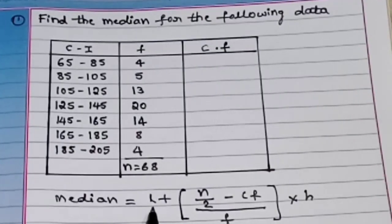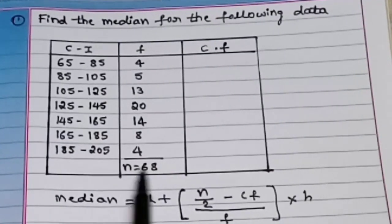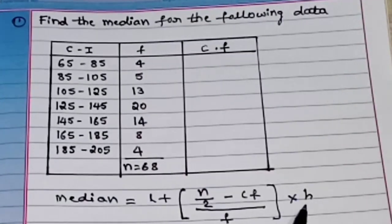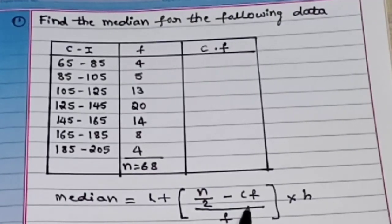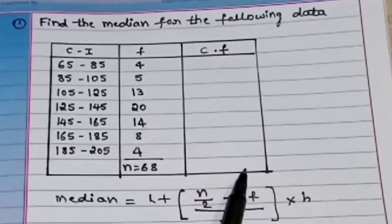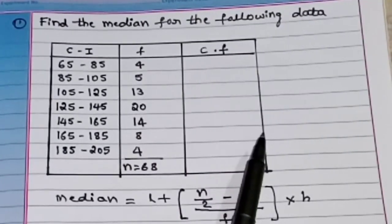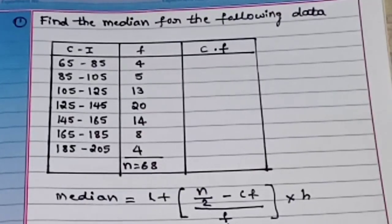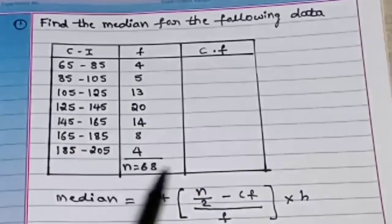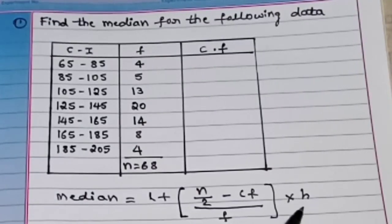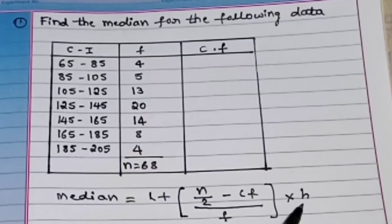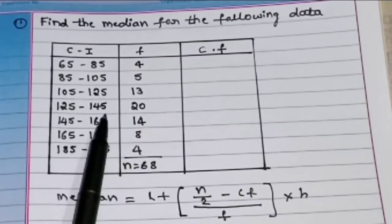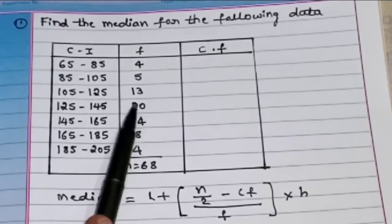We need L; n we already know — n equals 68. We need cf, we need f, we need h. cf means cumulative frequency — that we need to find out. From the cumulative frequency we need to choose one value and apply it here. f is frequency, and h means class interval size. The class interval size is 20.